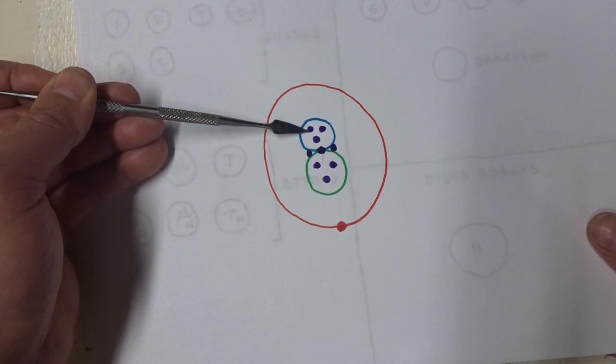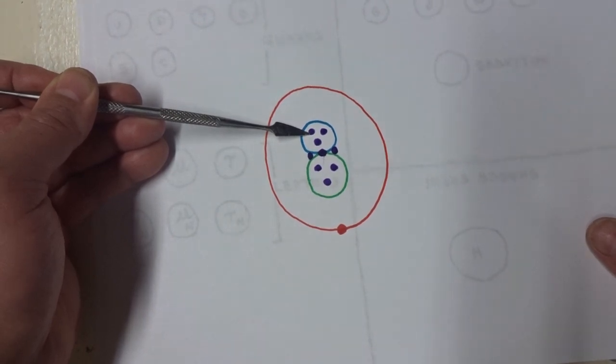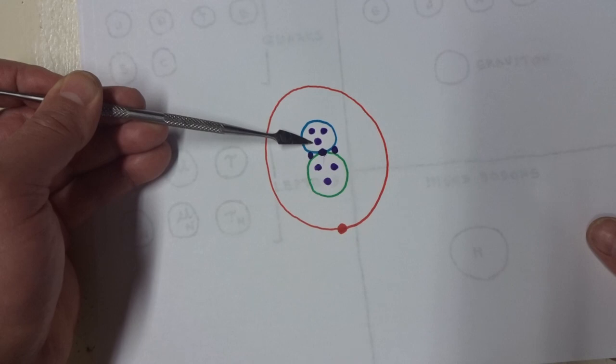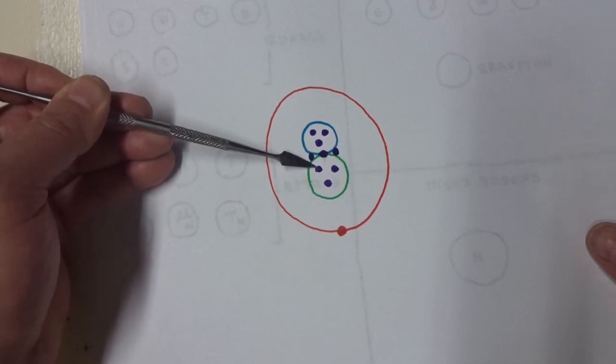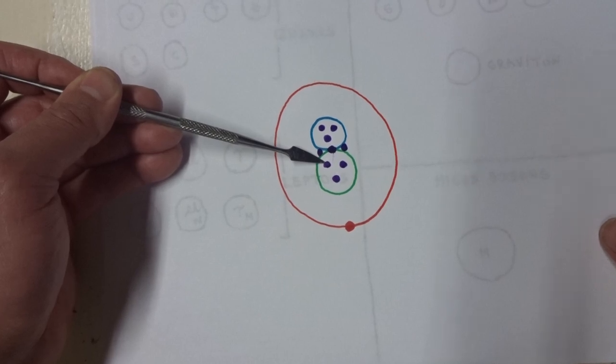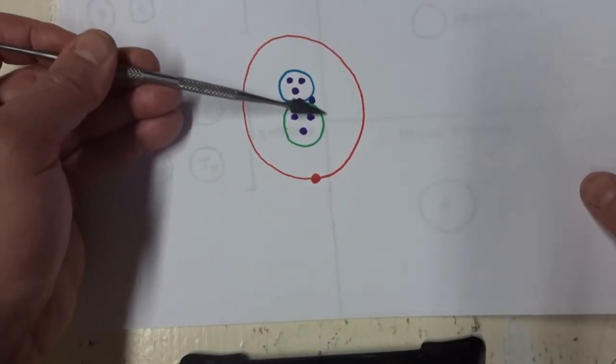The gluons are up and down subatomic particles, which I will describe soon. The electron orbits that nucleus.